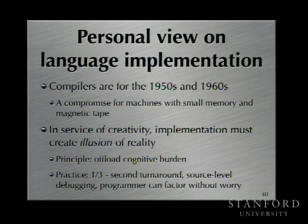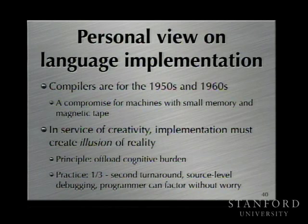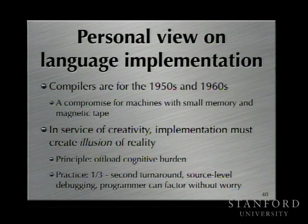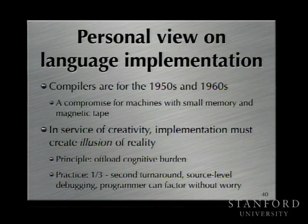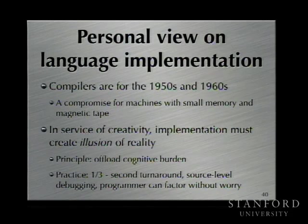I had a vision: compilers are old school — they're compromises for bad machines — and now we have modern machines. To support creativity, the implementation really has to give the user the illusion of reality, just like Unix makes you think a file is real even though it's just data scattered around your disk. This follows the principle of offloading the cognitive burden. We wanted a third-of-a-second turnaround when the user makes a change. The behavior of the system should change instantly. Full source-level debugging even while doing optimizations. An implementation good enough that the programmer can factor into tiny routines without any performance penalty — offloading the burden of structuring for performance from the programmer.